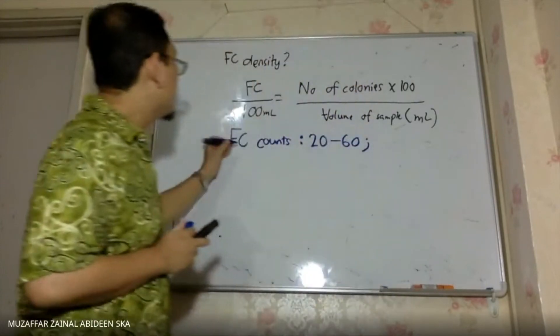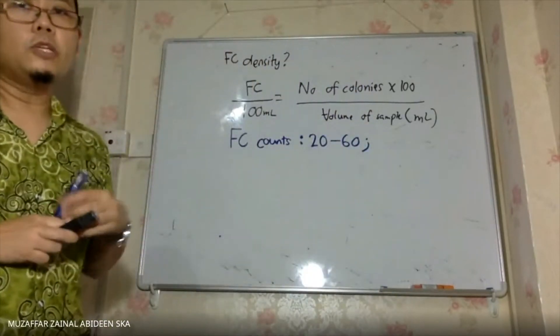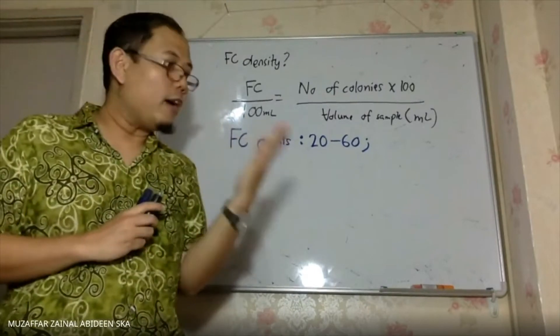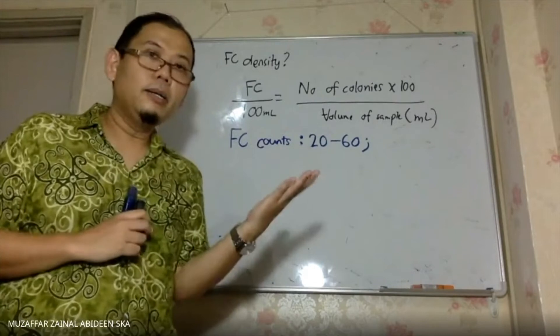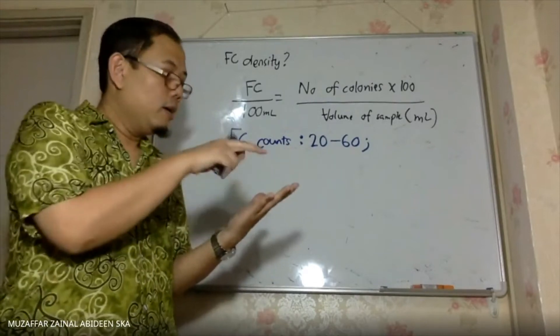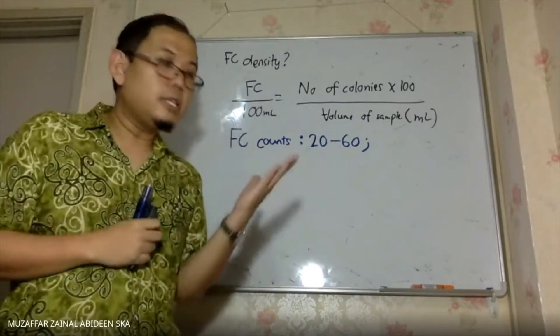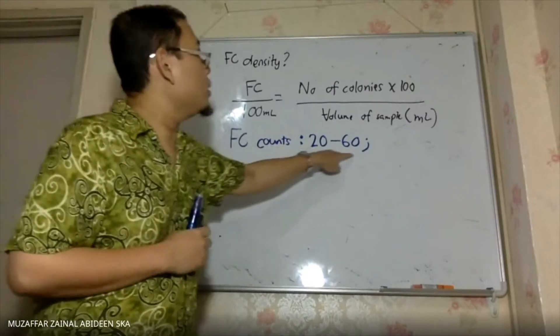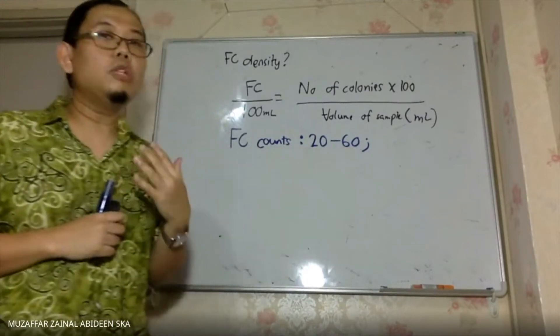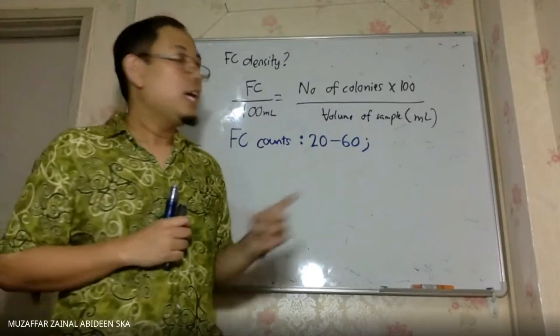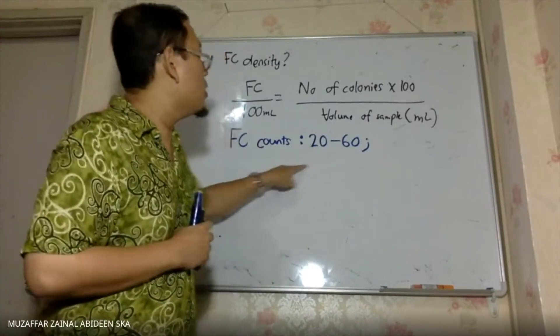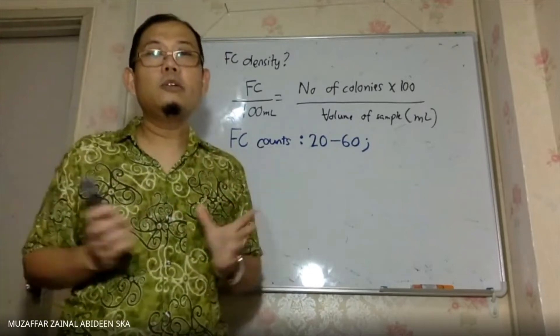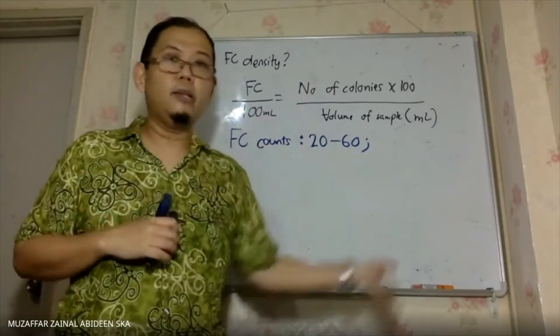The fecal coliform counts. What it means is when you count the number of colonies on the paper, it has to lie between 20 to 60 then that will give you a valid result. If it's out of this range, either greater than 60 or smaller than 20, the result should be abandoned, you should not use that, you should discard.